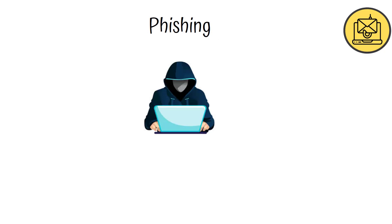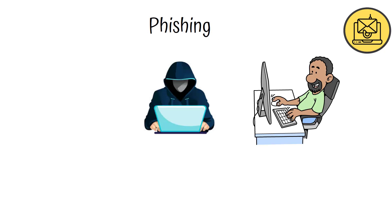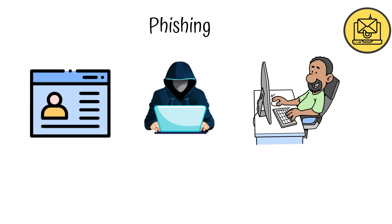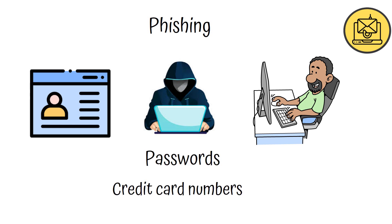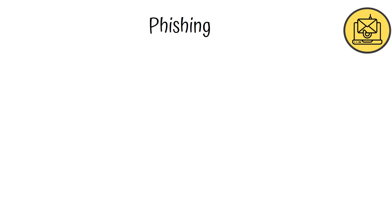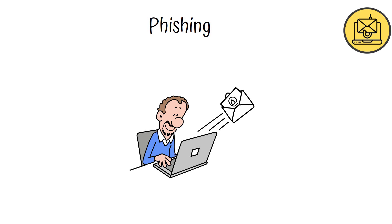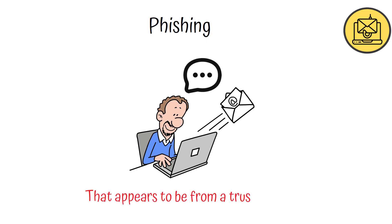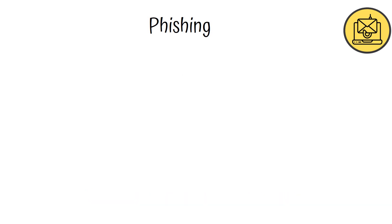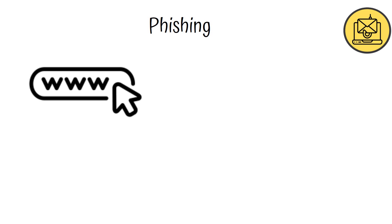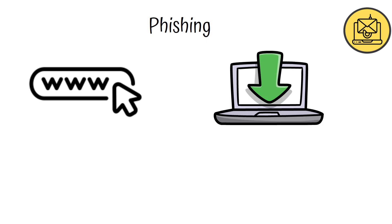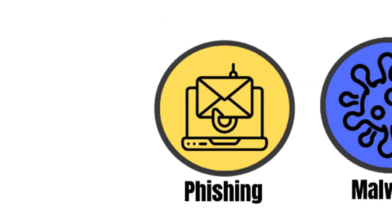Phishing is a common hacking technique that involves tricking users into providing personal information, such as passwords or credit card numbers. The hacker sends an email or message that appears to be from a trusted source, urging the target to click a link or download a file, which then steals their information.